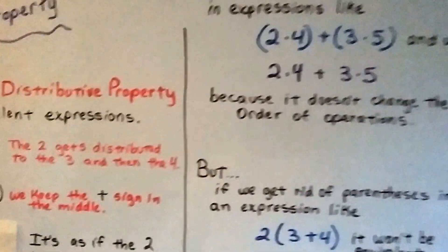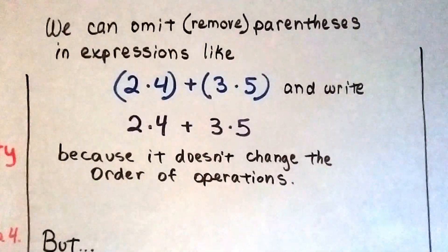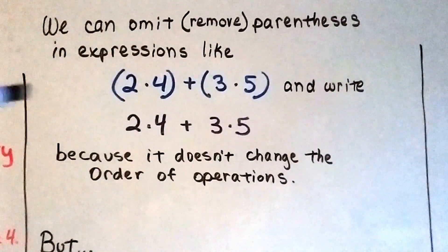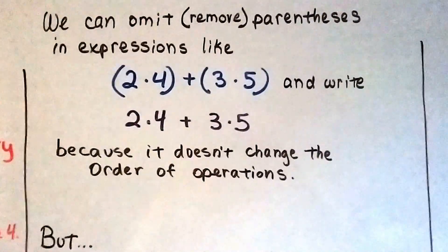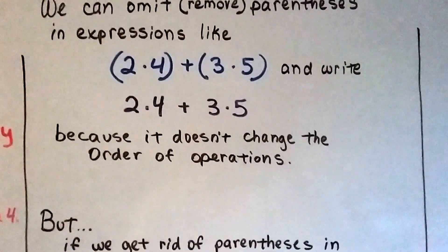So we can omit or remove parentheses in expressions like (2·4) + (3·5) and write 2·4 + 3·5 without parentheses because it doesn't change the order of operations. We're going to multiply and then add. It stays the same.